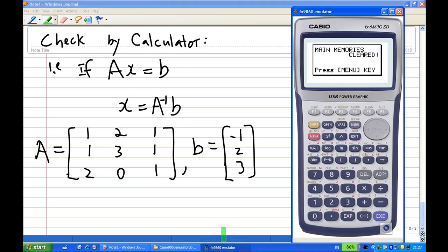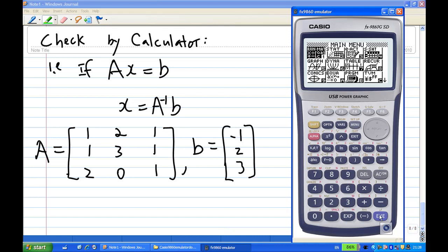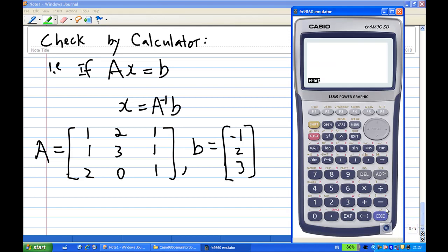So, let me use my calculator. I press the menu, and then execute and run, and put in the matrix. So, matrix A in this case is a 3 by 3 matrix. I'm going to enter 1, 2, 1, 1, 3, 1, 2, 0, 1. That is matrix A.